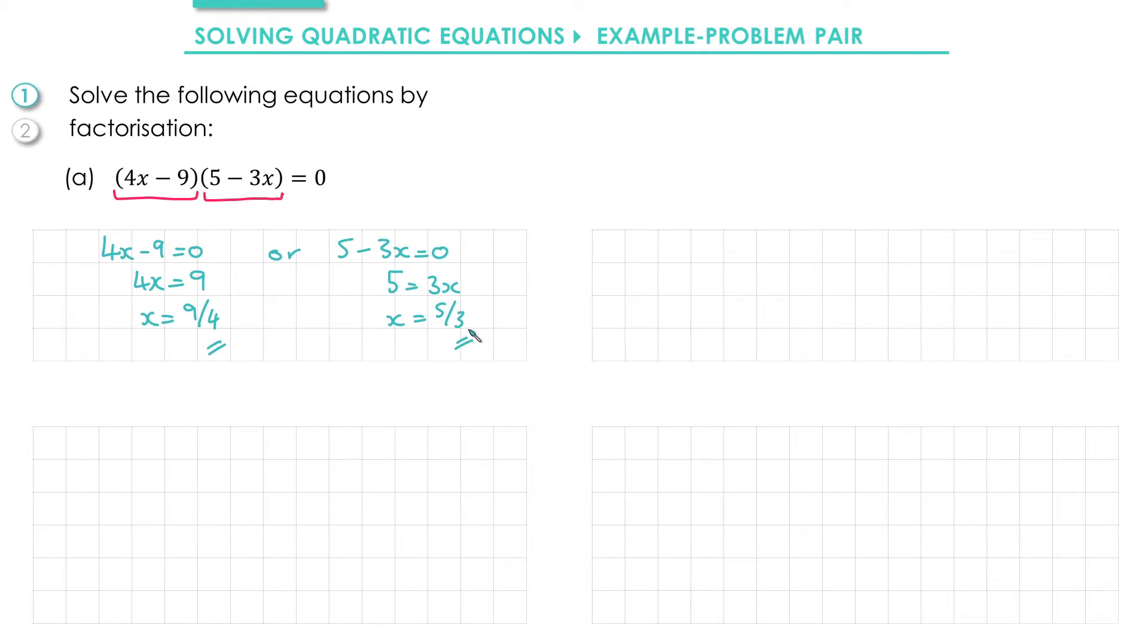It's worth pointing out that you don't actually have to do two lines of working out to get to your answer here. If you're comfortable going straight from this question to writing down the answer, then that's perfectly acceptable and you should after a while be aiming to get to that level.